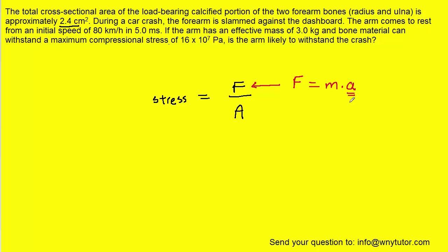Let's turn to finding the acceleration next. We are told that the arm comes to rest during the collision, so we know that the final velocity is going to be 0 meters per second. The initial velocity is given to us as 80 kilometers per hour. We're going to have to convert that into meters per second, so let's do that.